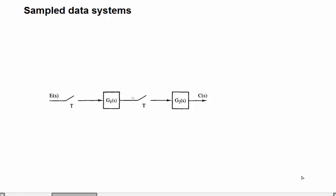We have two samplers here — they are synchronized with the sample time T. We also have two transfer functions in Laplace form: G1(s) and G2(s). The output signal is C(s) and the input signal is E(s).